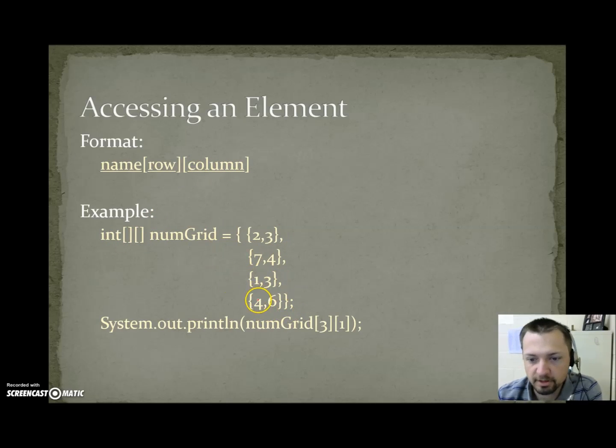If we have the same numGrid that we keep working with, if we wanted spot 3, 1, first we'd have to count which row it is. So normally in math you go x, y. But since grids are accessed by row column, it's y, x. But we're not going to call it y, x because that would be confusing. We're going to call it row column. So you just need to remember rows come first, then columns.